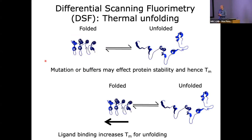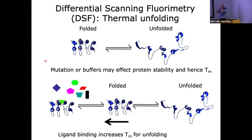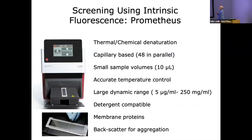Instead of using denaturants, we can use temperature. If we increase the temperature and we have some small molecules - a ligand, buffer, or anything else - that bind onto the folded protein, then that's going to shift the equilibrium. It will take more temperature to unfold because you've got an additional equilibrium happening. We can do this with intrinsic protein fluorescence using the Prometheus instrument. It's very small scale, works in capillaries, you can do 40 at a time, and it's got a very large dynamic range depending on the intrinsic fluorescence of your protein. You can also use membrane proteins and look at aggregation by backscatter.